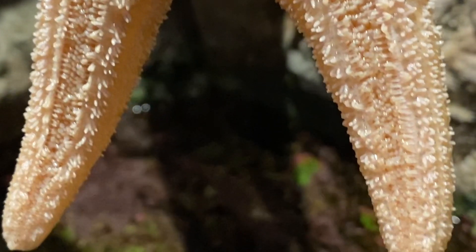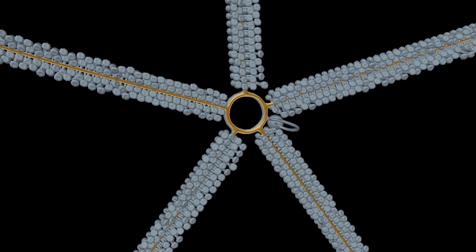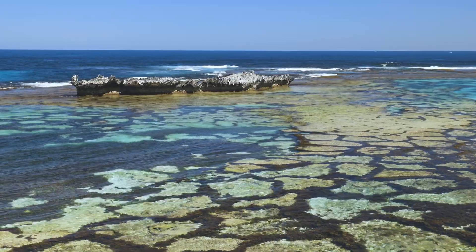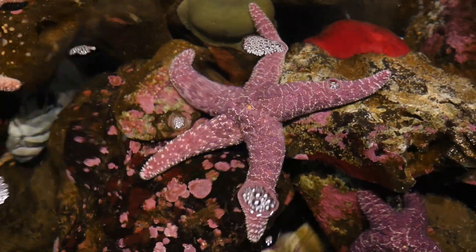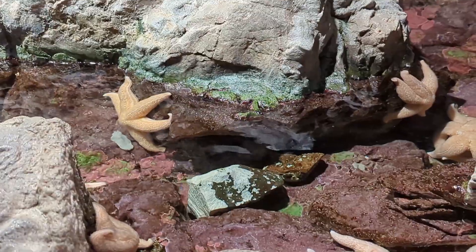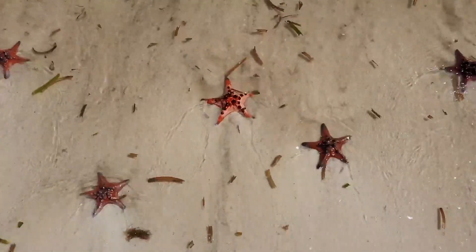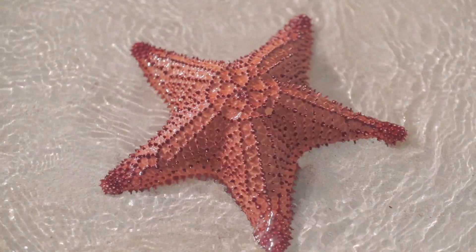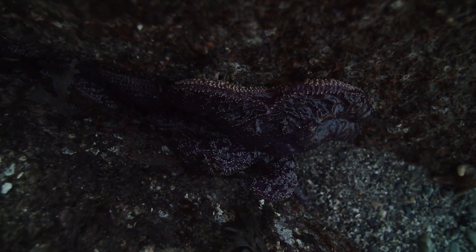What has between 5 and 40 arms, has no brain or blood, and can be found in every ocean around the world? Why, the sea star of course! There are nearly 2,000 species of sea star, ranging from warm tropical waters to the polar regions.